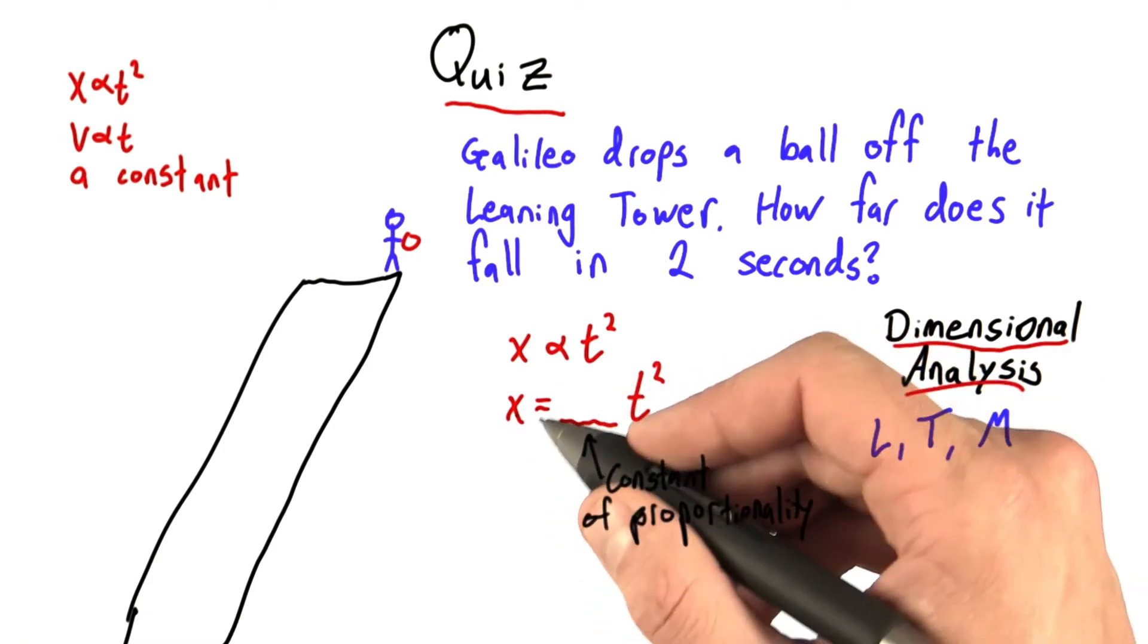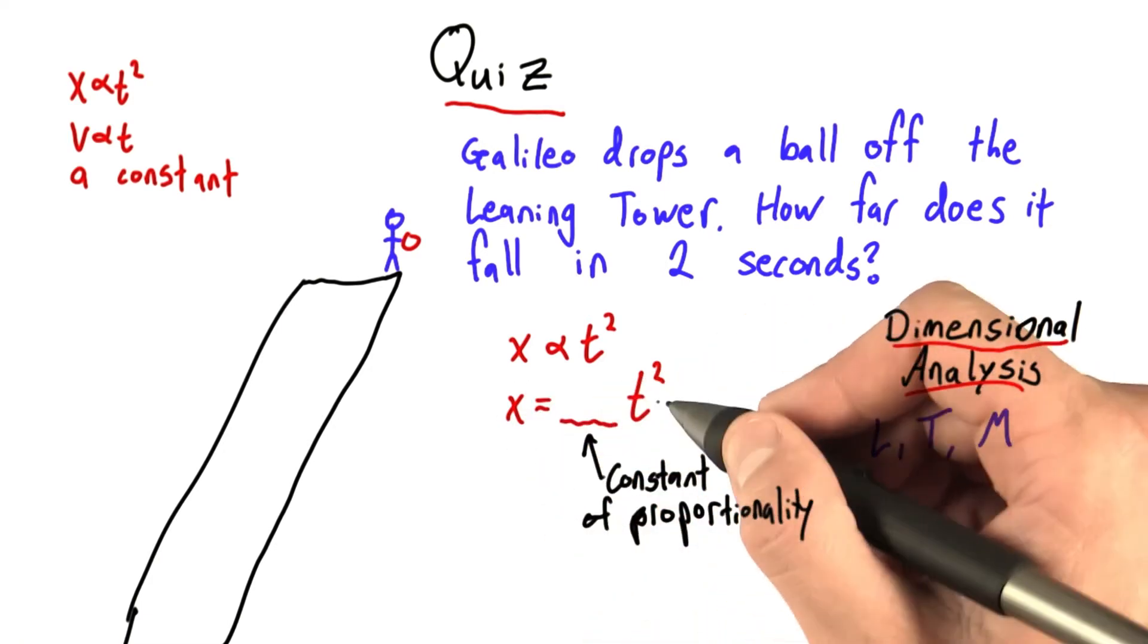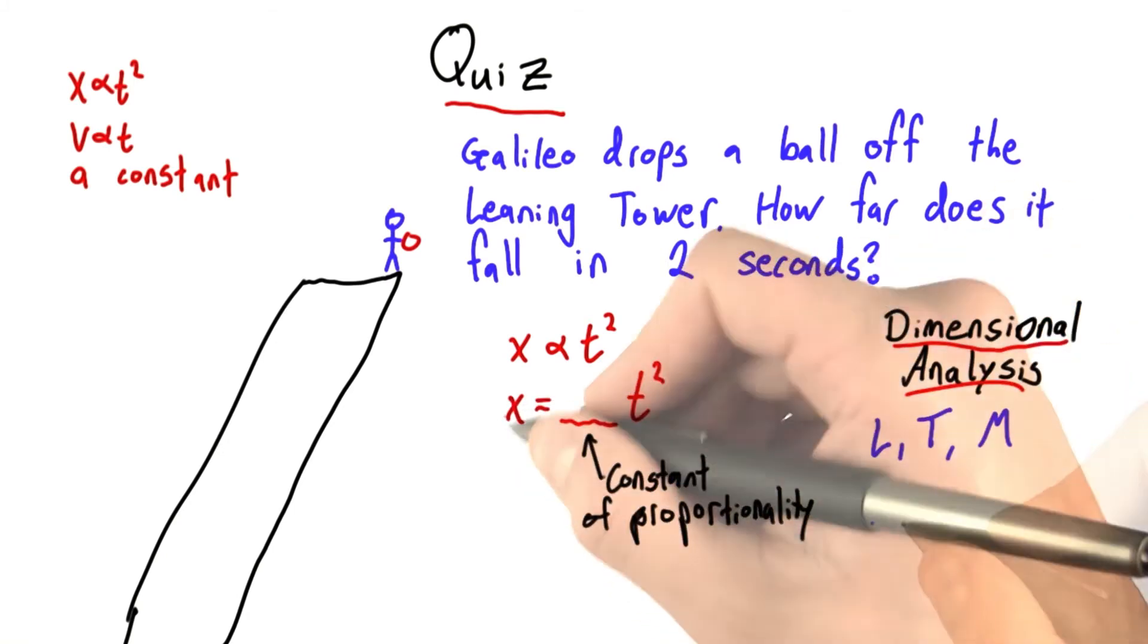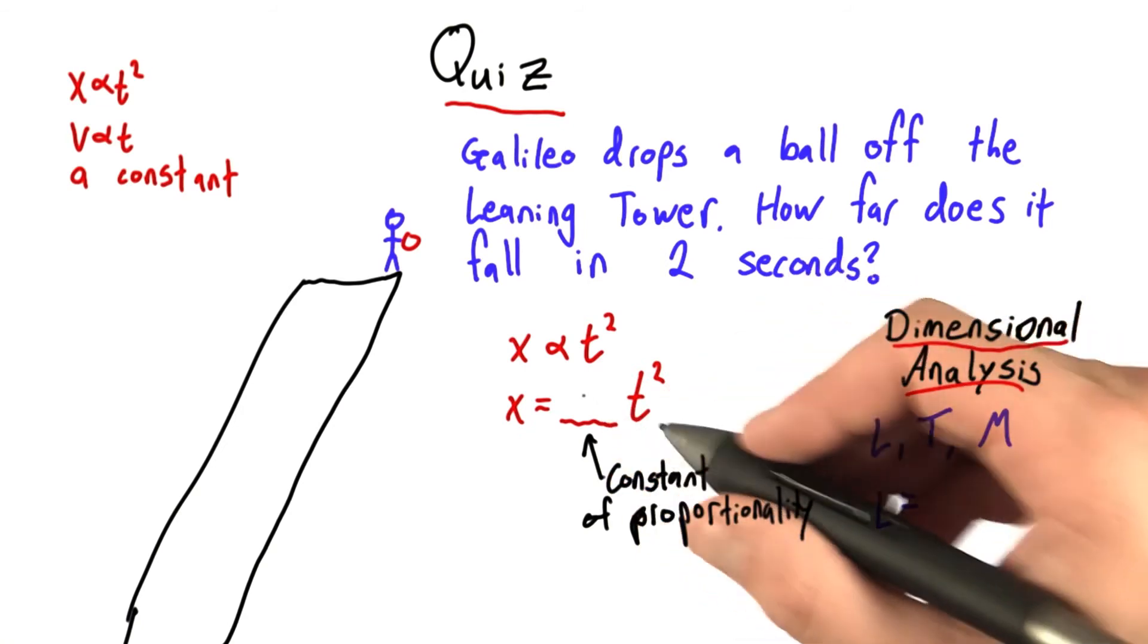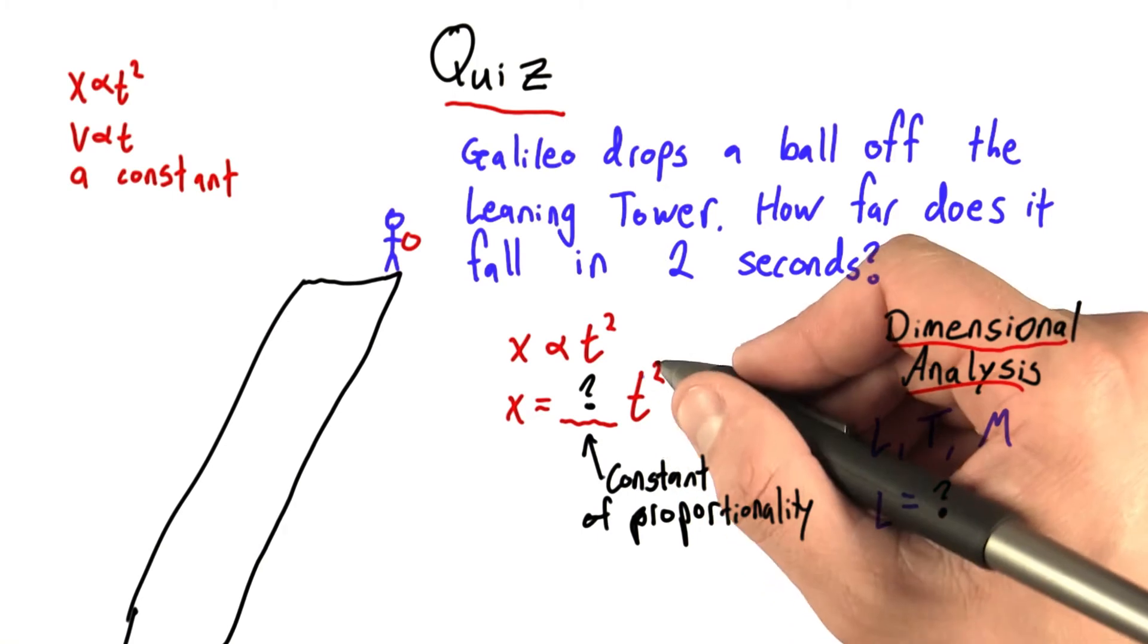Let's look at this equation, x equals something times time squared, and just keep track of the units. Well, x is a unit of length, it's a unit of distance. So on the left hand side I'll write length. And that equals some unknown here, multiplied by something with units of time squared.